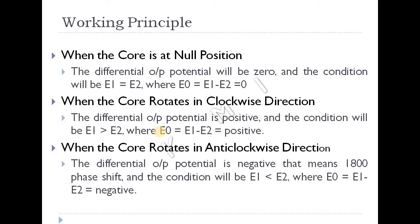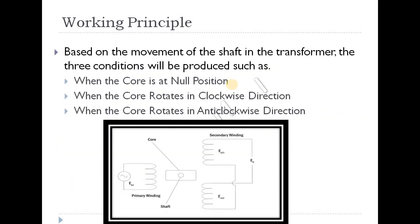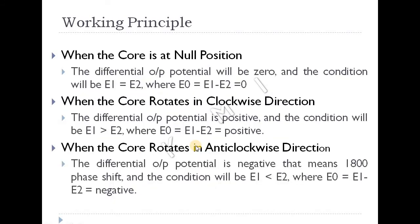When the core is at the null position, the output is zero. Therefore E1 is equal to E2, and E0 equals E1 minus E2, which equals zero at the central null position. When the core rotates clockwise, E1 becomes greater than E2, so E0 equals E1 minus E2, which is positive.